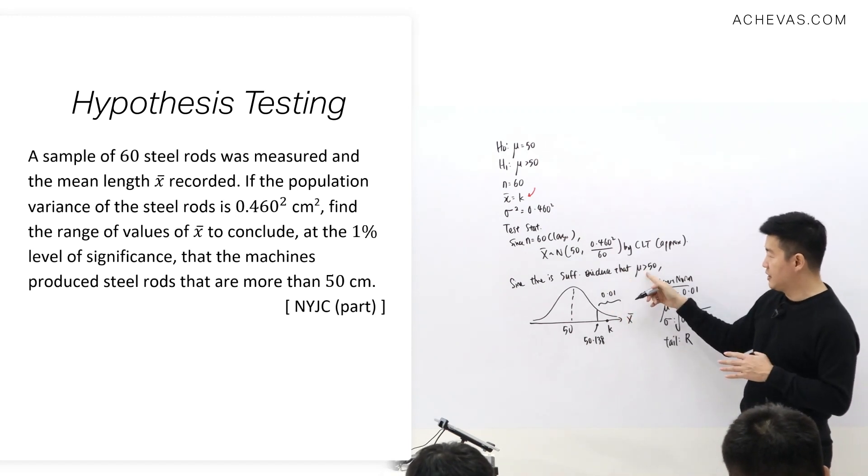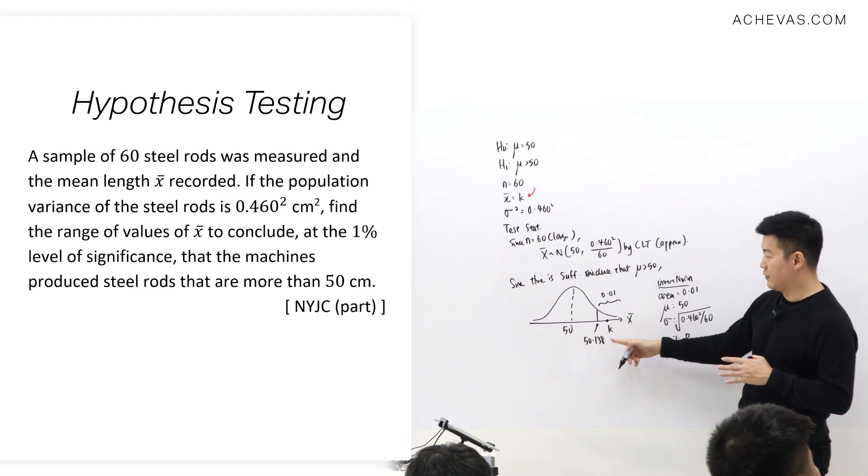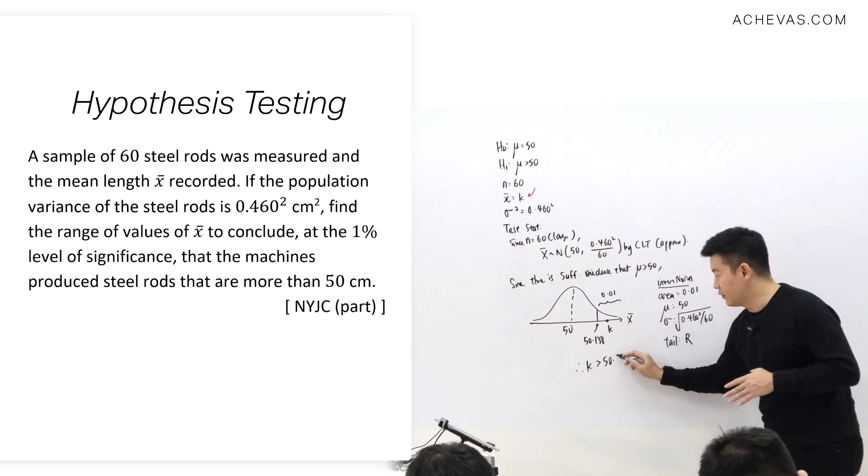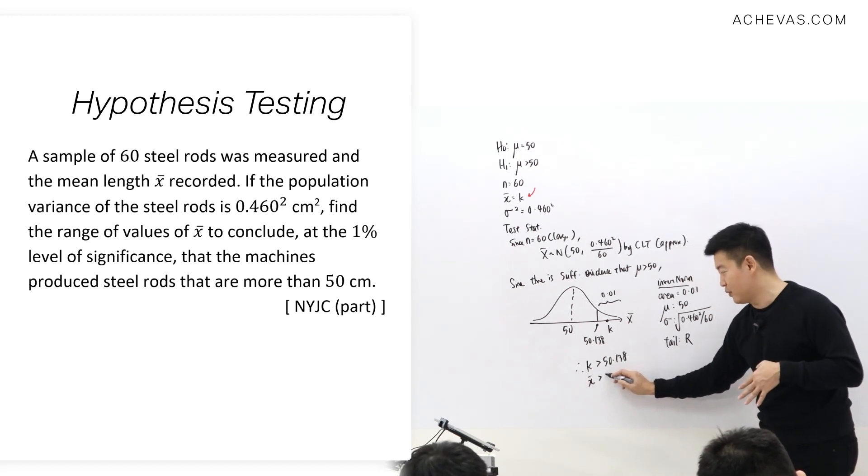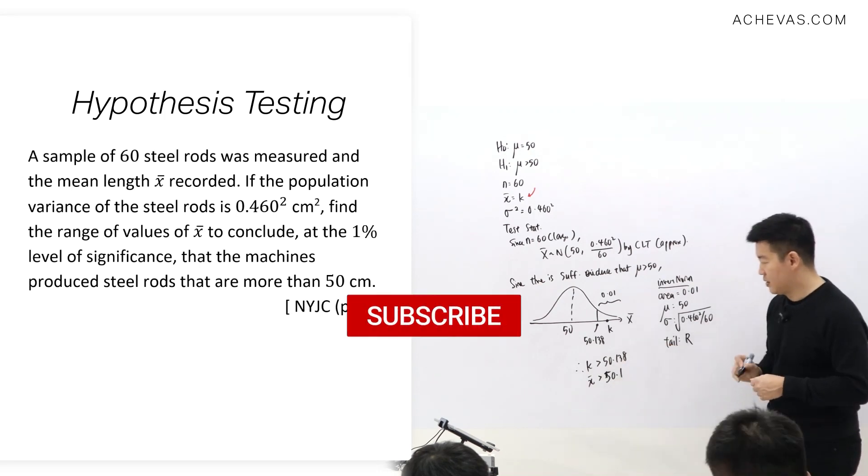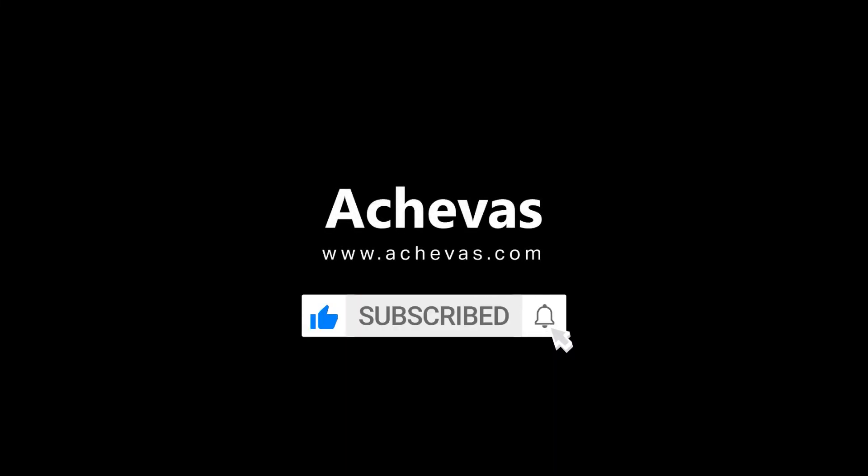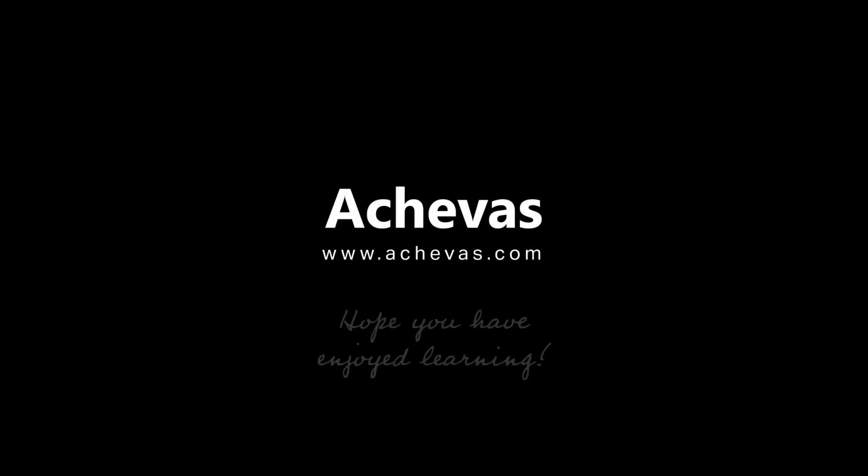So if there were to be sufficient evidence that mu is bigger than 50, that means K must be more than 50.138. This gives me an idea. I mean K is X-bar, so I just rewrite this to three significant figures.